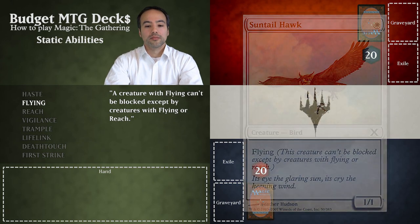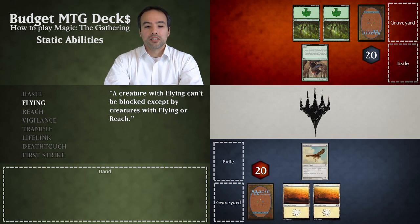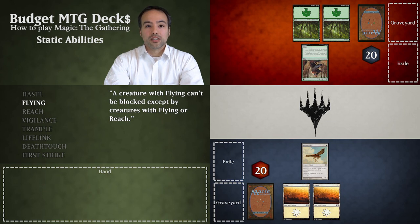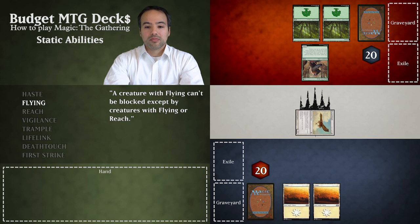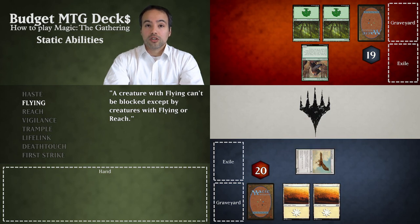Let's look at a different scenario. We already had our Sun Tail Hawk since the beginning of the turn so it doesn't suffer from summoning sickness. Our opponent has a Runeclaw Bear. In our combat phase we declare our Sun Tail Hawk as attacking. However, since the Runeclaw Bear does not have flying or reach, it can't block our Sun Tail Hawk and our opponent takes one point of damage. If the roles were reversed and the Runeclaw Bear was attacking us, we would have been allowed to use our Sun Tail Hawk to block the bear.